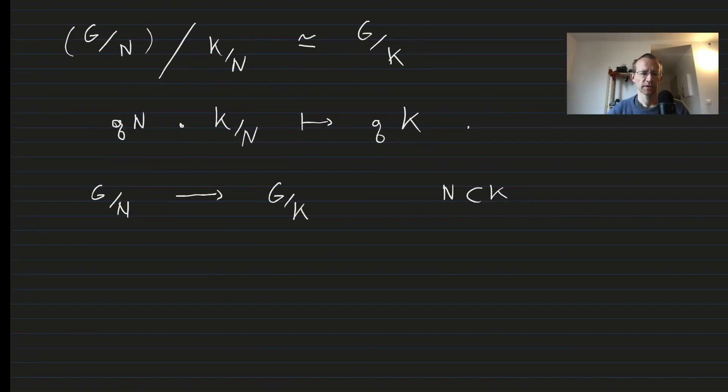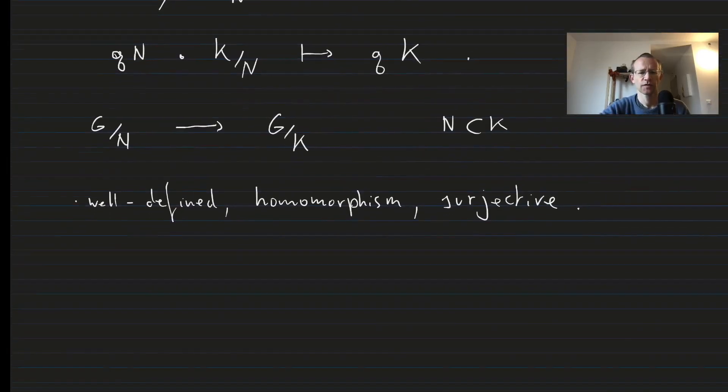So let's study this map. First of all, it's well-defined because N is a subgroup of K. It is trivially a homomorphism, and it is clearly surjective.